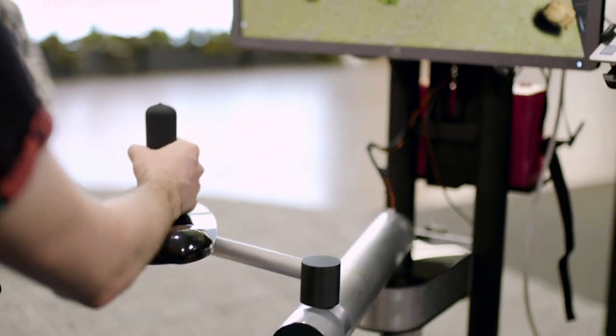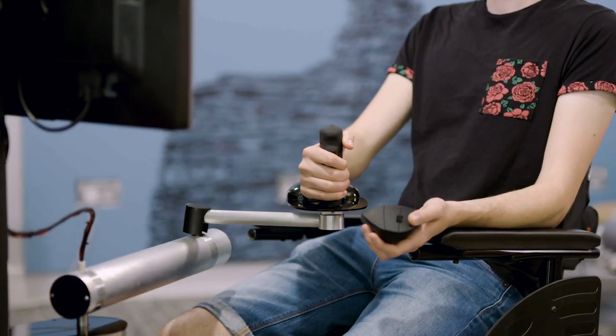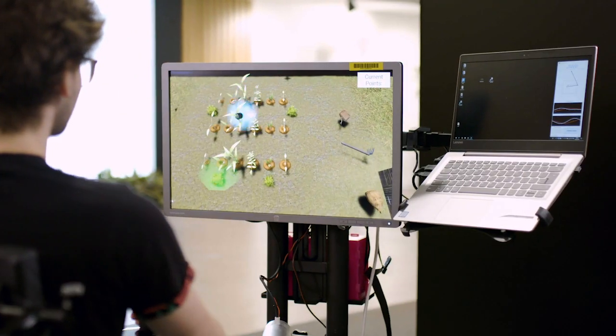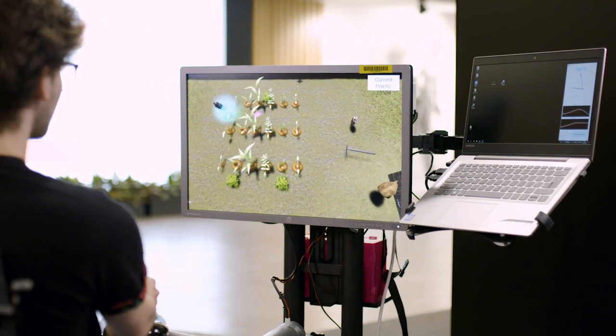In the early stages of your recovery, it might be that the robot moves your hand around quite a lot to allow you to achieve targets and reach targets on the screen. As your therapy progresses and as your stroke recovery improves, the robot does less and less and you're encouraged to do more and more.